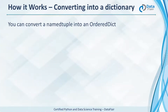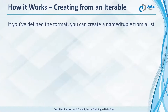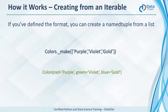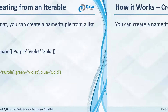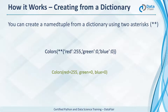We can also convert it into a dictionary, into an ordered dict. The asDict function lets us do that — it uses this named tuple and creates and returns an ordered dict. You can create a named tuple from a list if you have defined the format, which let's assume we already have. So it uses this list to build this named tuple. Using two asterisks, we can also use a simple dictionary to create a named tuple.